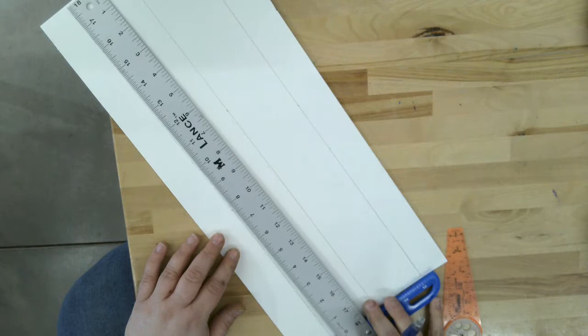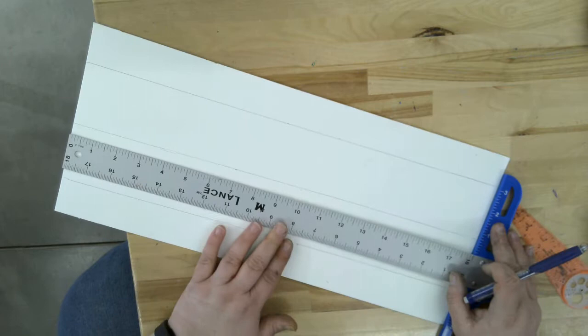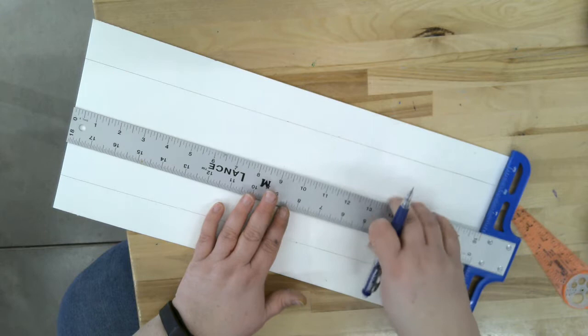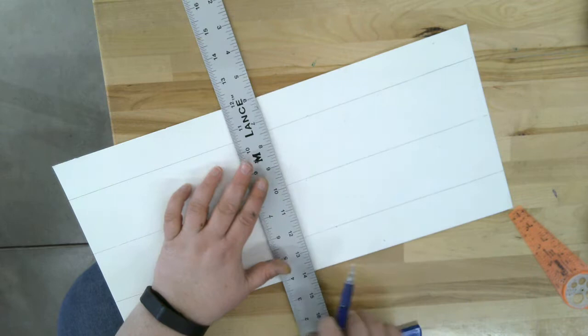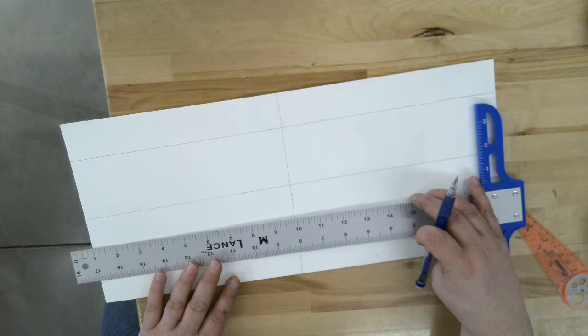Okay, and then if I measure this, this is 18 inches long. So half of 18 is nine. So I'm going to mark off that nine in two spots and measure that off halfway.